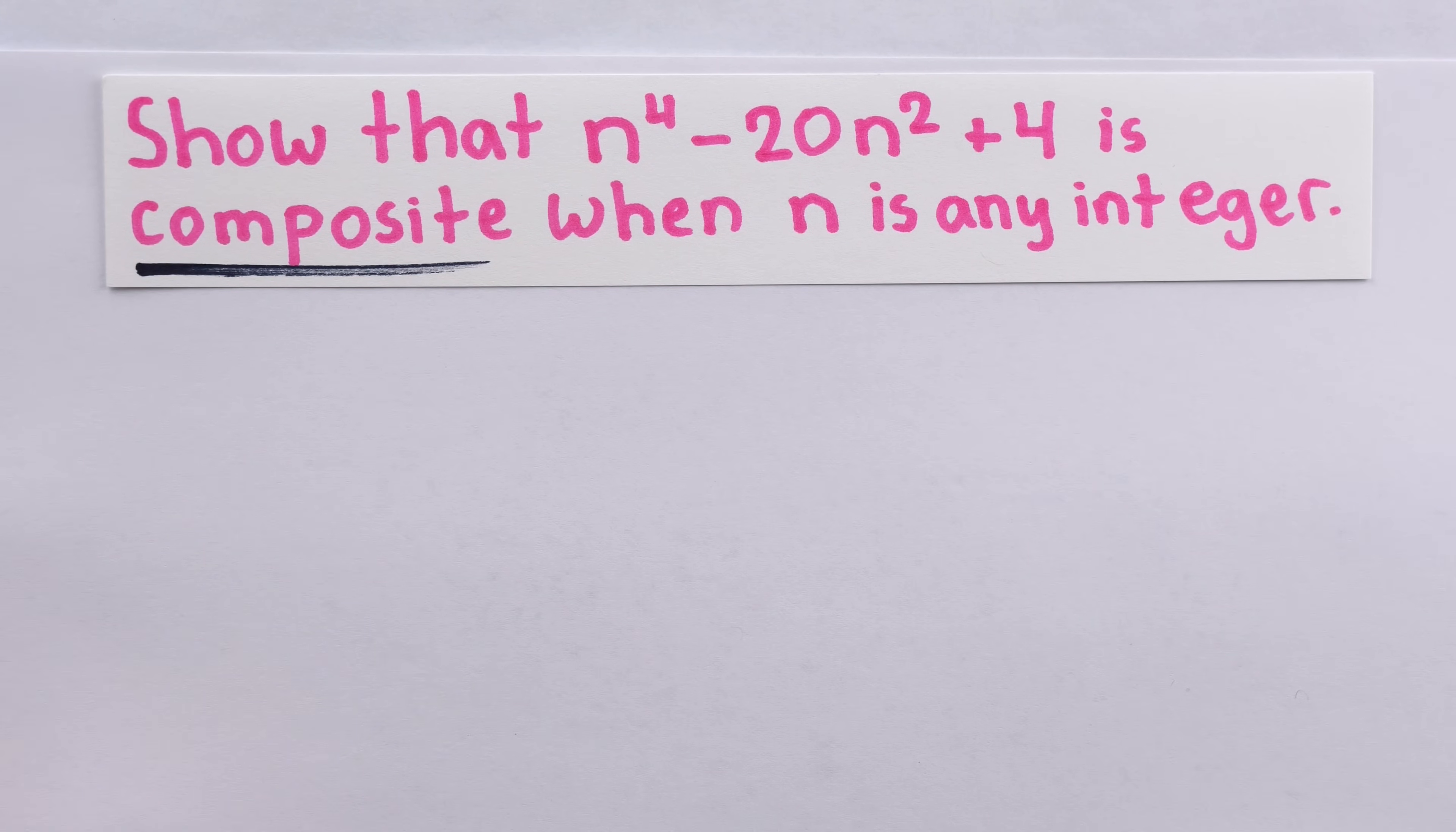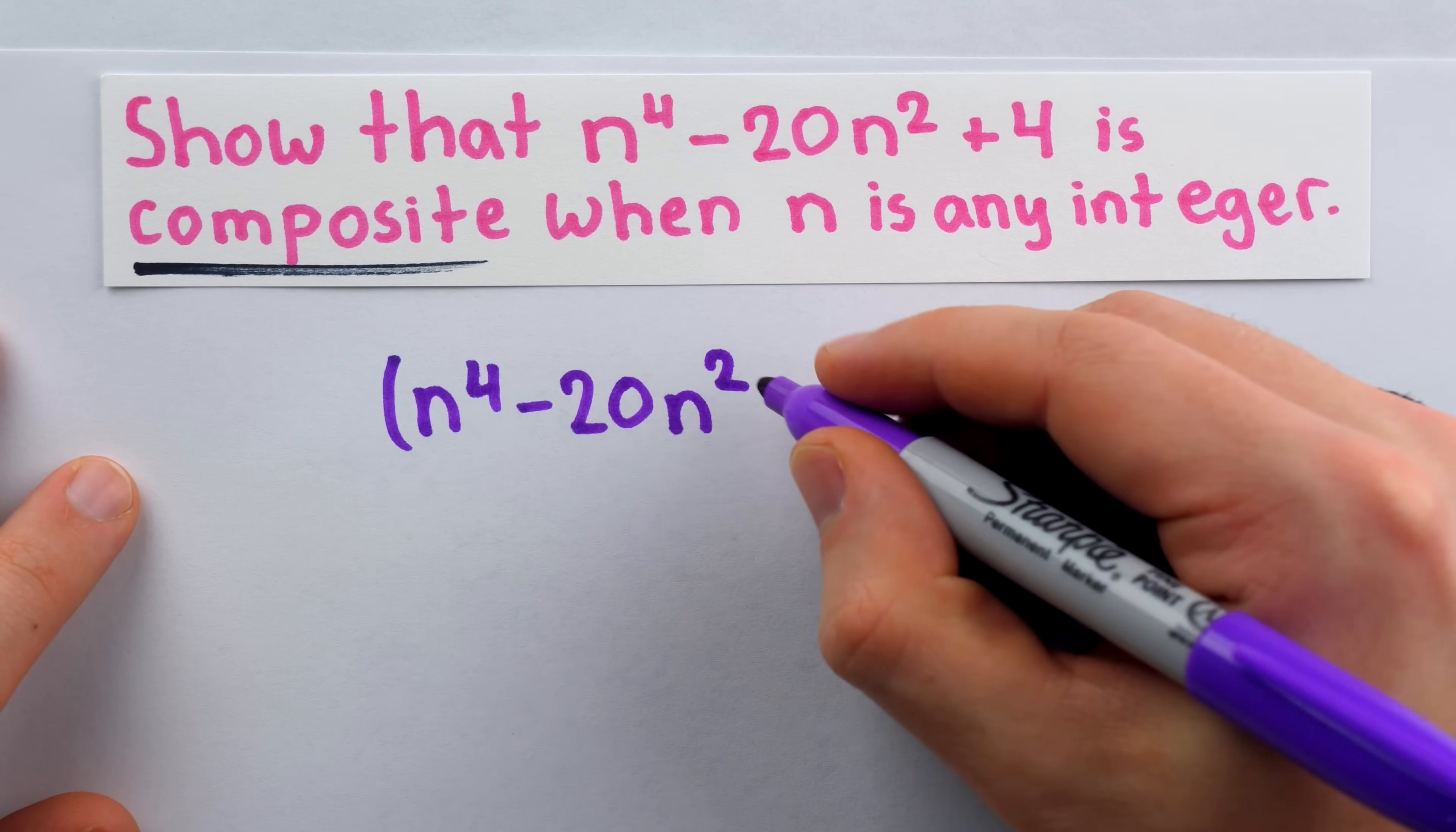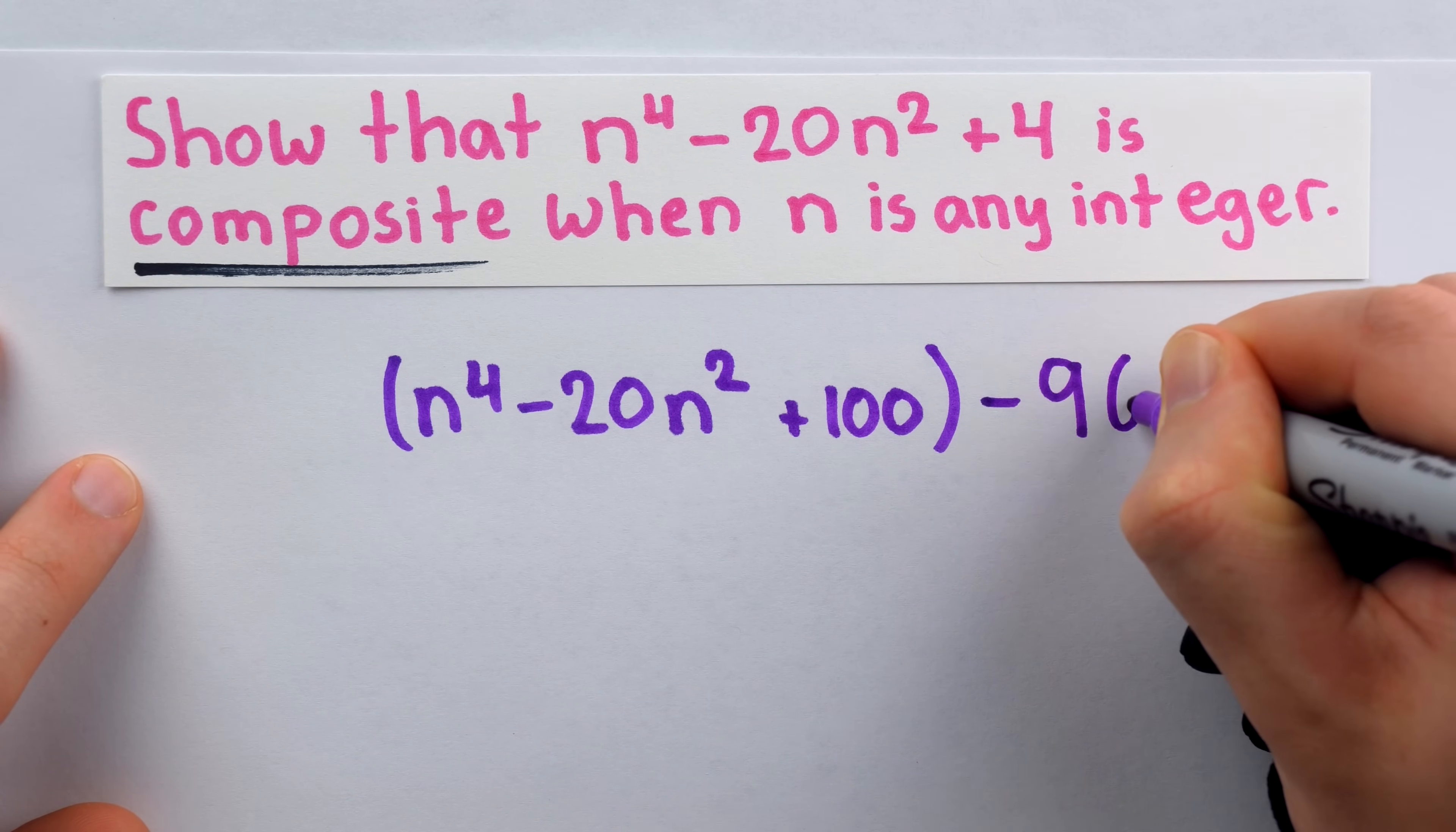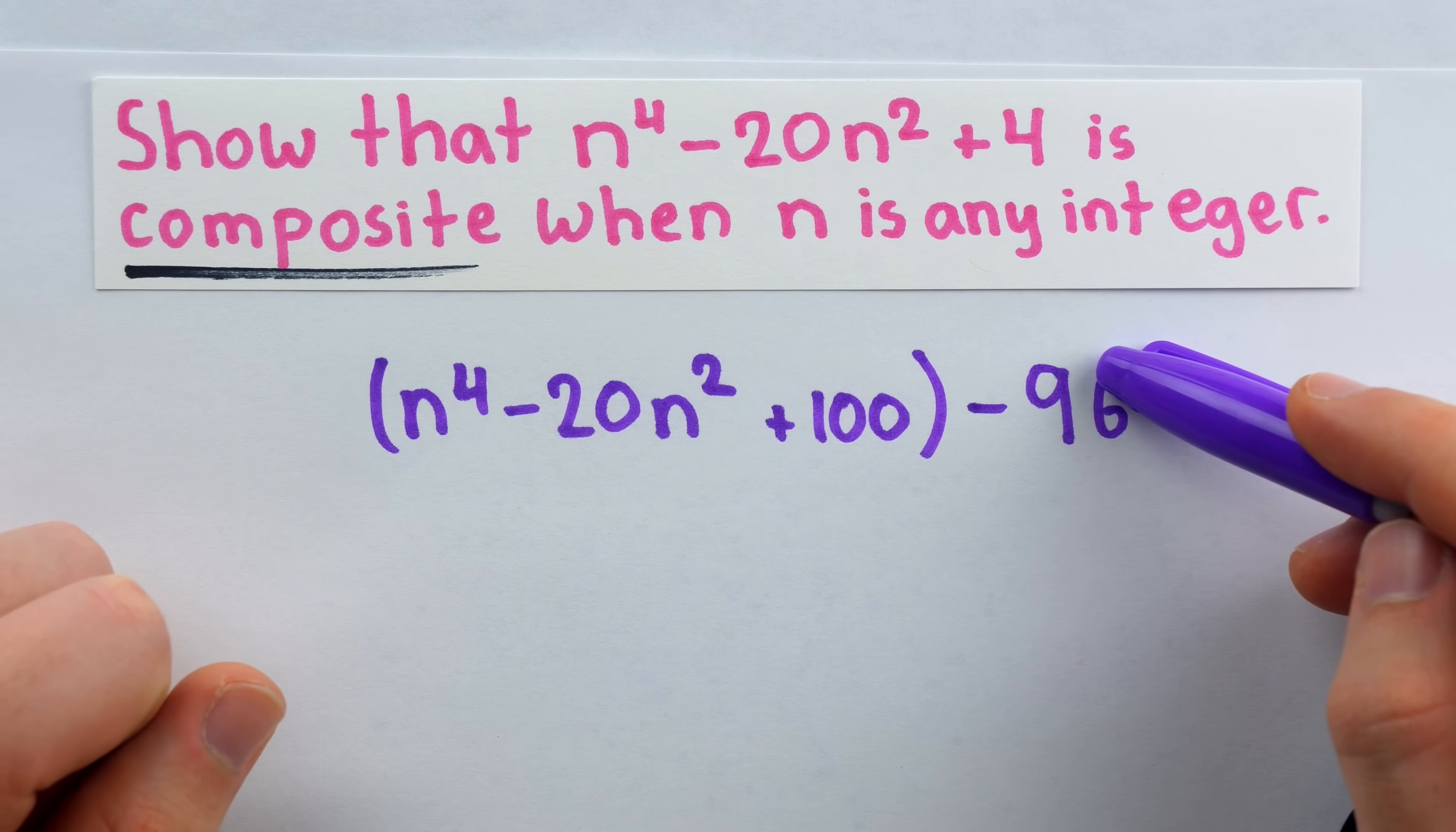If we wanted to change the constant, that 4, so that we had a perfect square, we would have to write n to the power of 4 minus 20n squared, and then half of negative 20 is negative 10, squared is 100. So we would need the constant to be plus 100. This is a perfect square, but then to adjust it so that we're not actually changing the original polynomial, we would need to subtract 96. 100 minus 96 would give us that 4 back. Unfortunately, though, this isn't a difference of squares. We've made this a perfect square. It's n squared minus 10 squared, but 96 is not a square, so this isn't going to work.